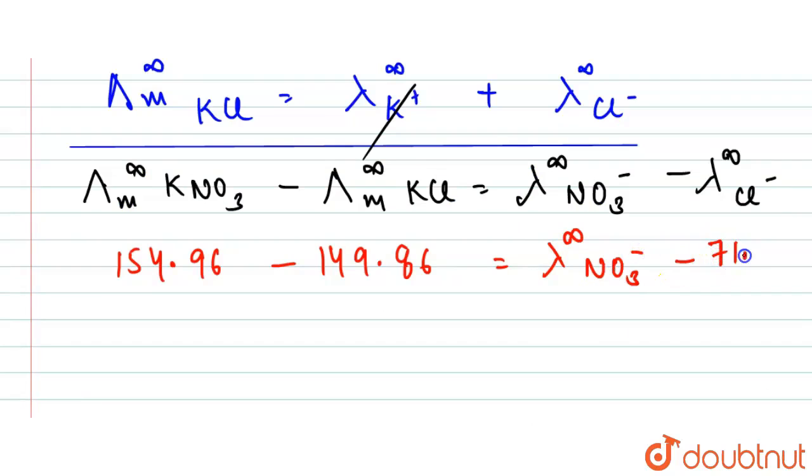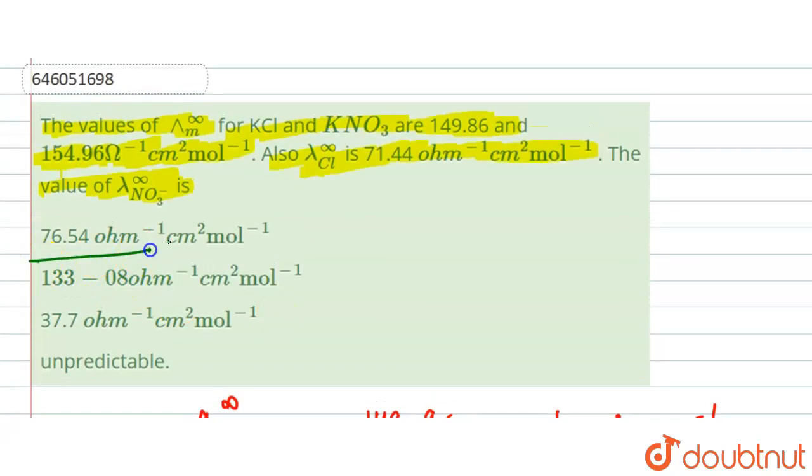So from here, the value for NO₃⁻ is equal to 76.44 per ohm centimeter square per mole. So here what we got is 76.54, so this means that here our correct answer is option number one. Thank you.